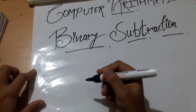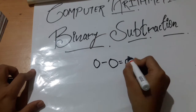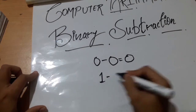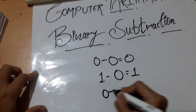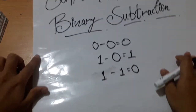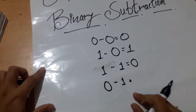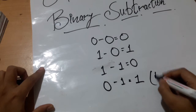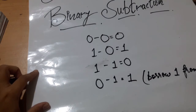For binary subtraction, we will follow a few rules. First, 0 minus 0 is 0, same as in decimal numbers. Next, 1 minus 0 is also 1. Now, 0 minus 1 is a tricky part — the answer will be 1, and it will borrow 1 from the next digit.